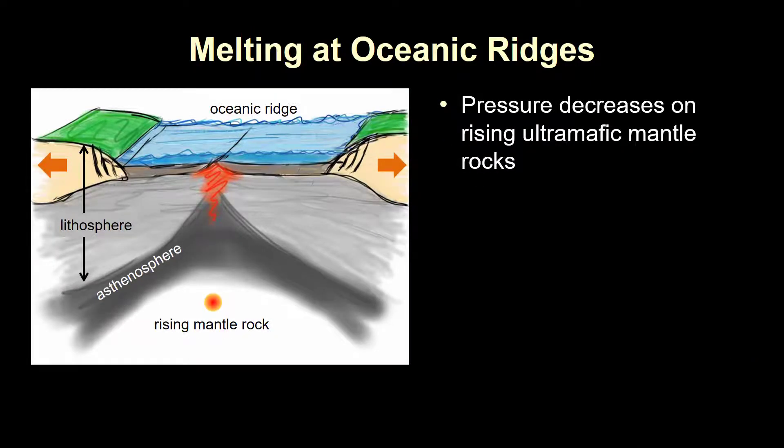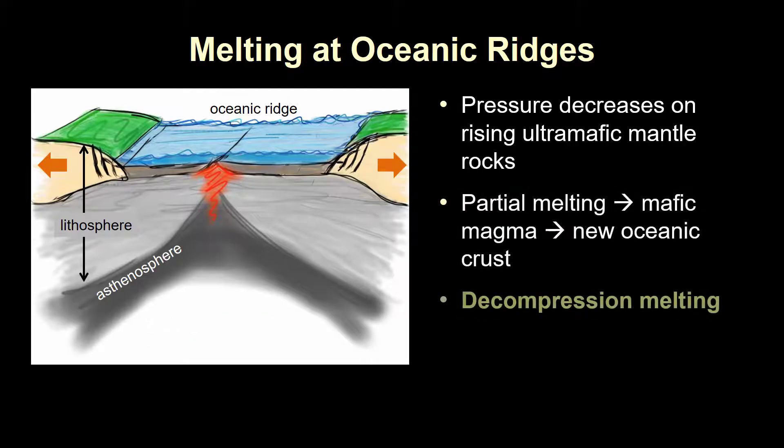The key here is that these mantle rocks start out at around 100 kilometers depth, where pressures are greater, and move upward to a point just below the surface where pressures are much lower. This change in pressure is sufficient to prompt partial melting of the rising asthenosphere, a process known as decompression melting.